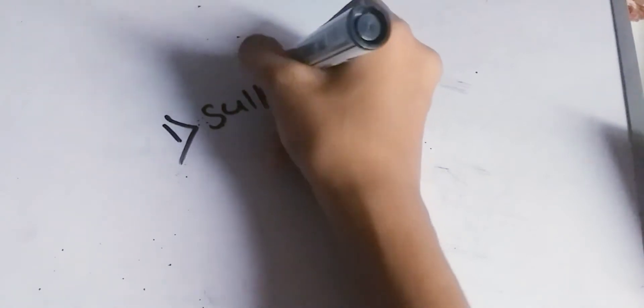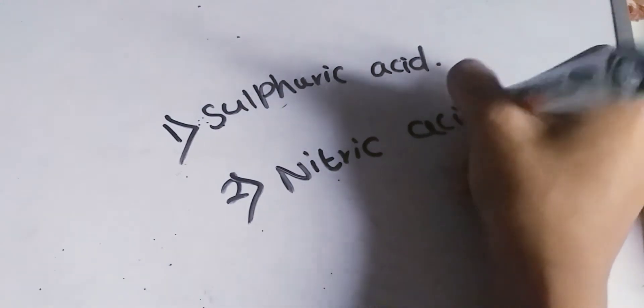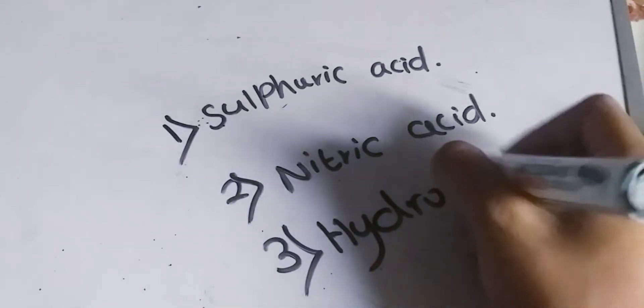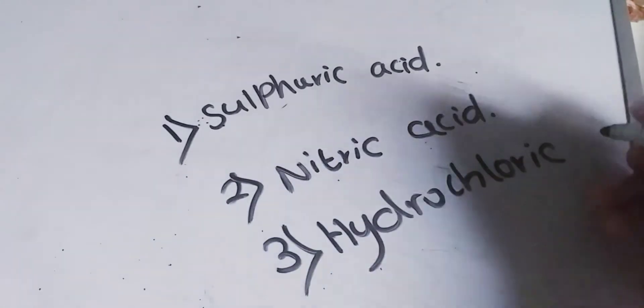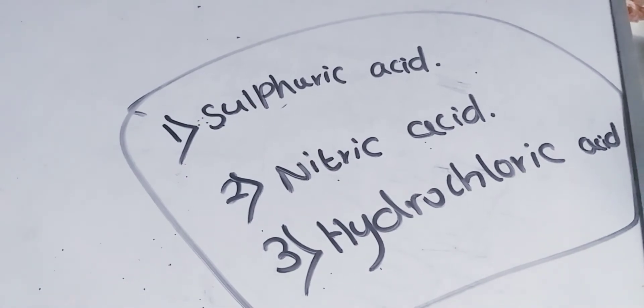There are three types of acidic substances used frequently in the laboratory. The first acid is sulfuric acid, the second is nitric acid, and the third is hydrochloric acid. These are the three types of acidic substances used in the laboratory.